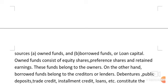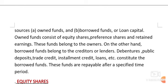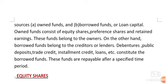Borrowed funds include loan capital such as loans from financial institutions or commercial banks, on which we have to pay interest. Own funds include retained earnings and equity shares. Borrowed funds include debentures, public deposits, and customer advances, which we have to repay to creditors or lenders.